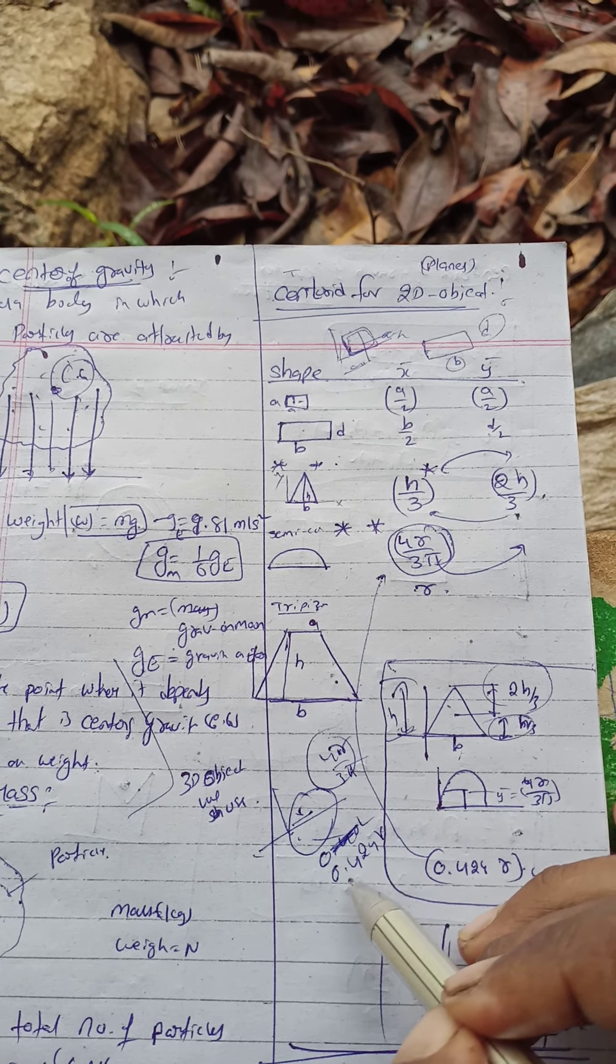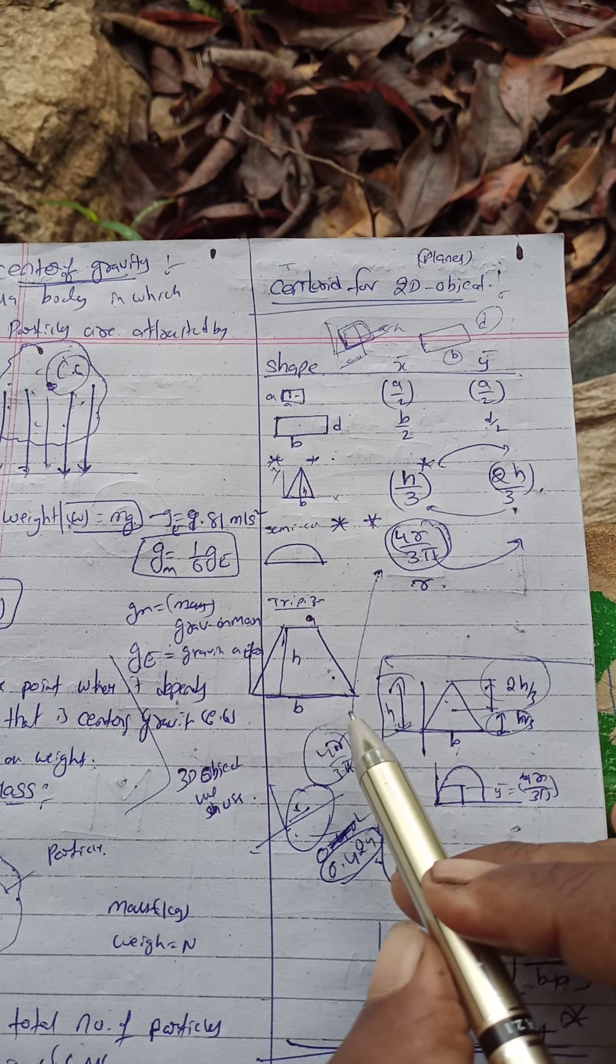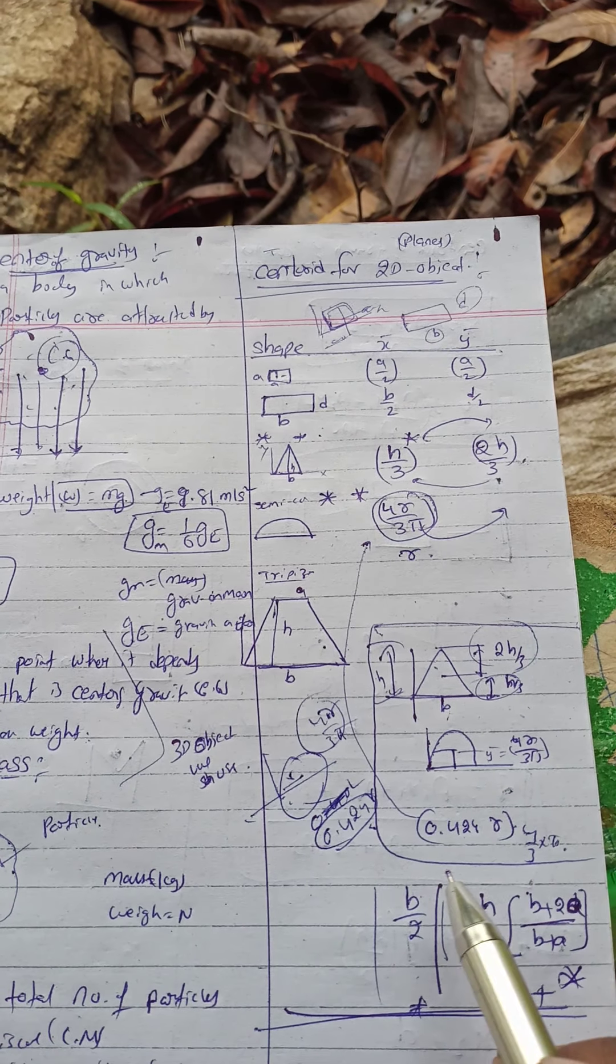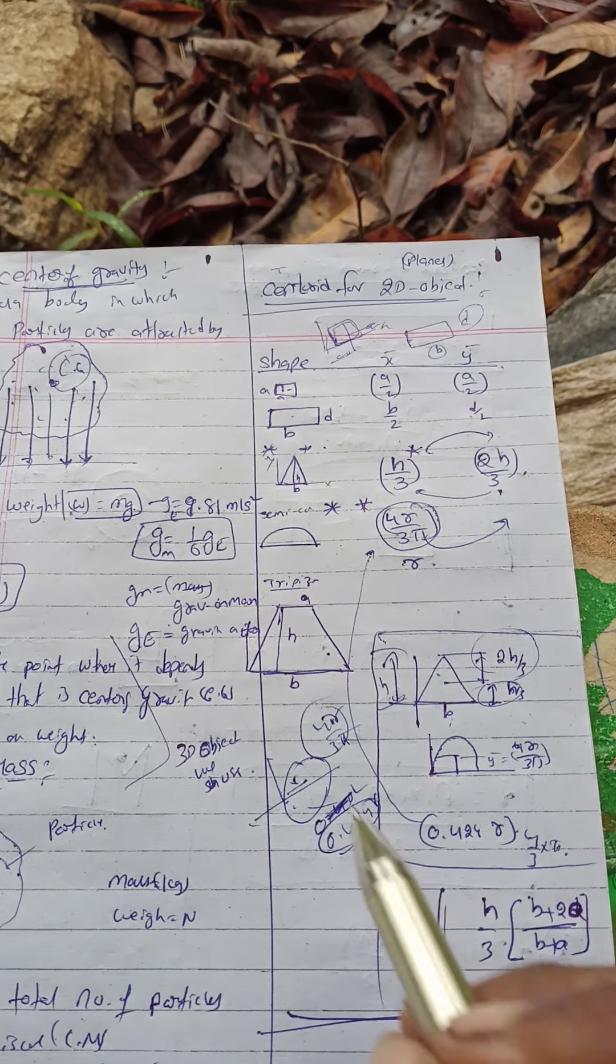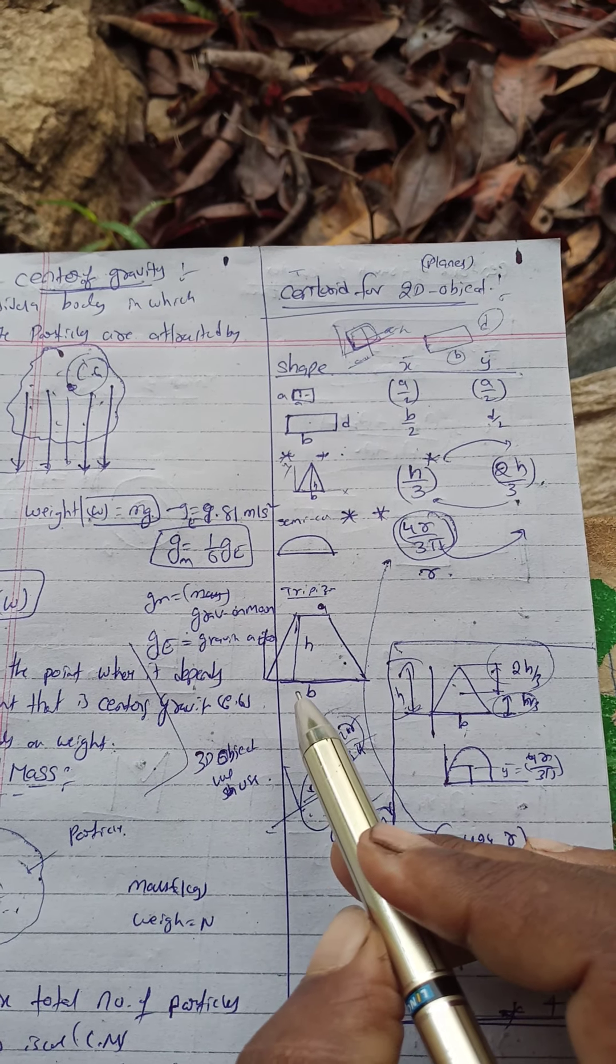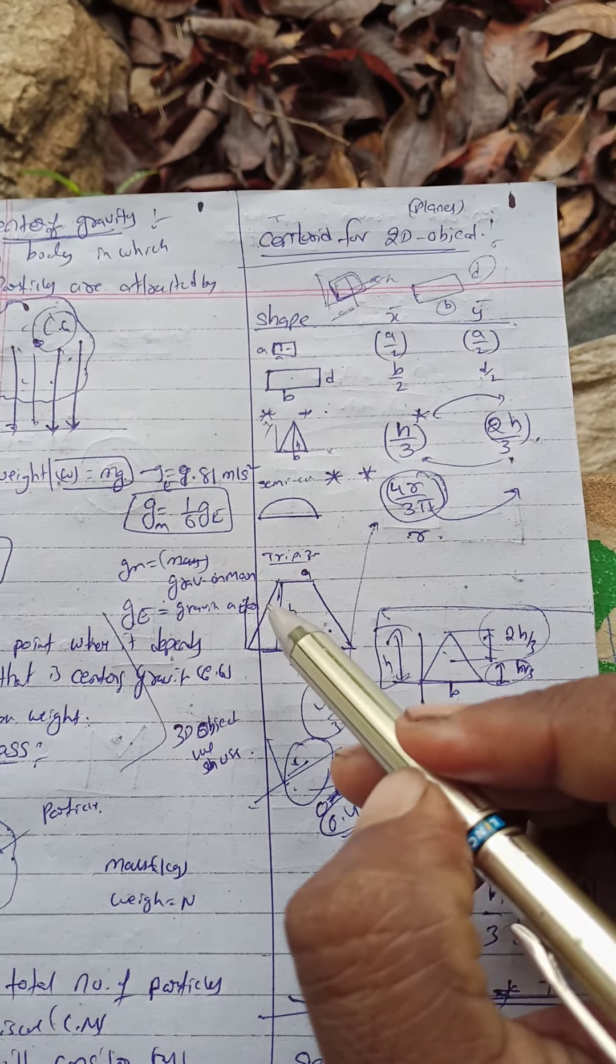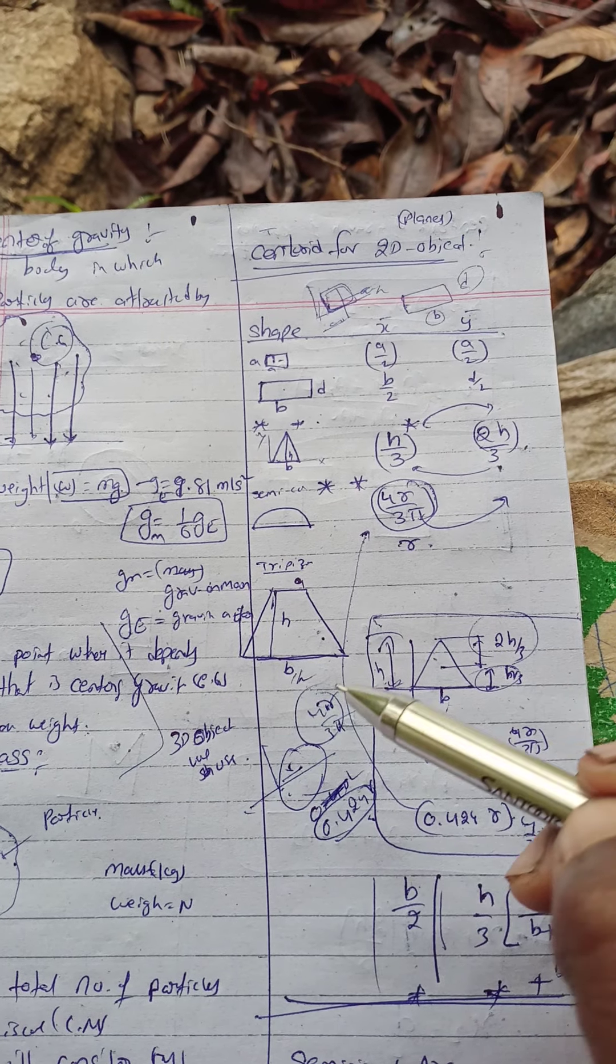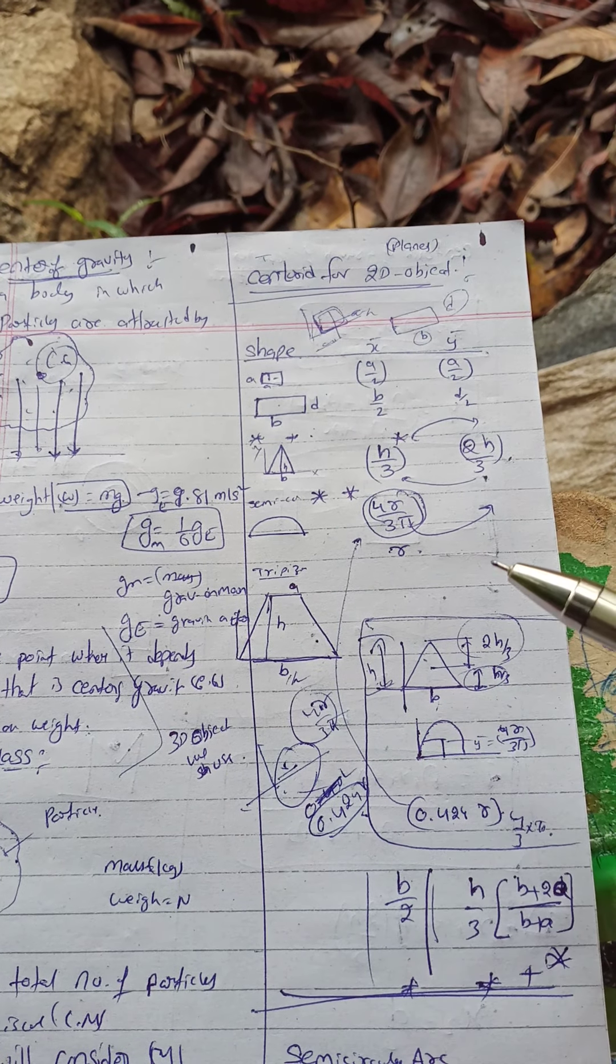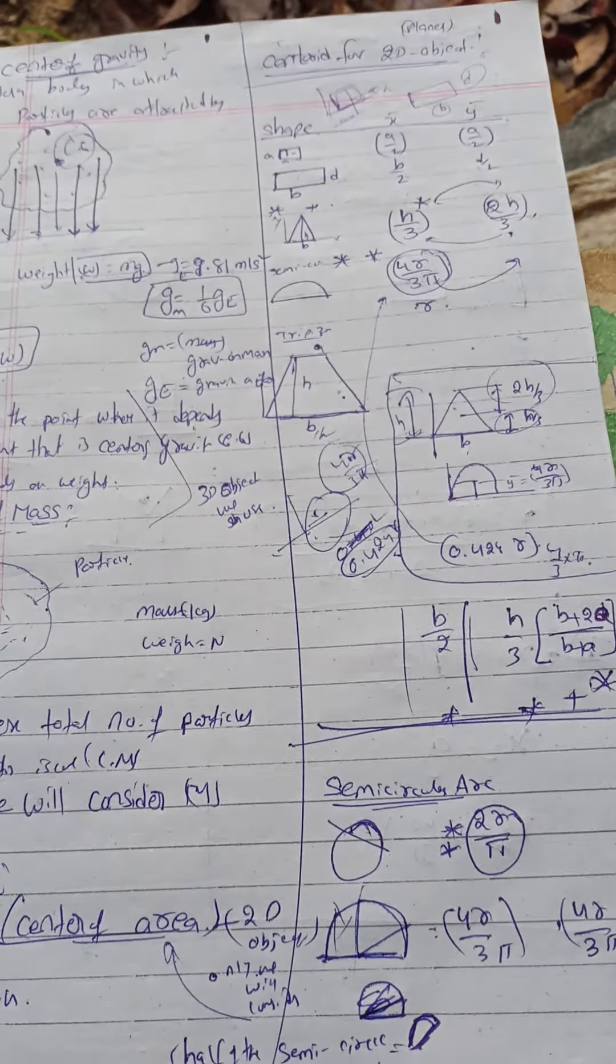On the x-bar we have b/2. Next, on the y-bar we have h/3 times (b + 2a)/(b + a), and the quadrant also.